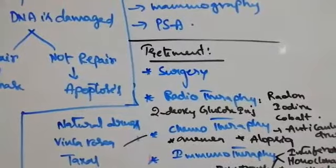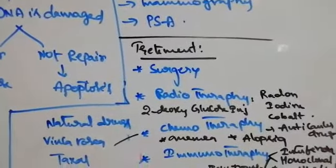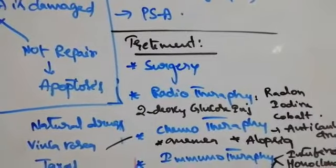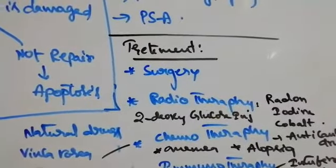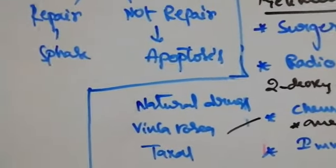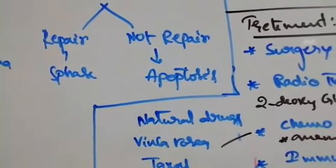Chemotherapy uses anti-cancer drugs. These chemotherapy drugs cause bone marrow depression, anemia, and follicular cells of hair are damaged causing alopecia, loss of hair. Natural anti-cancer drugs include Vinca, Rosia, and Taxol.